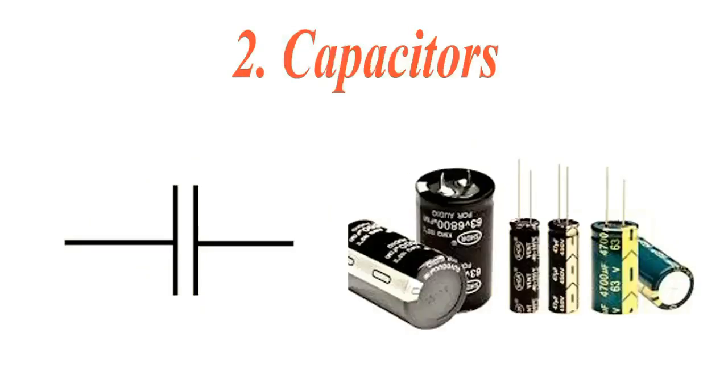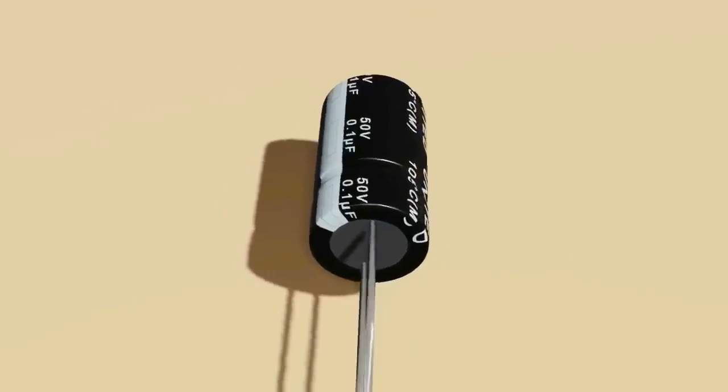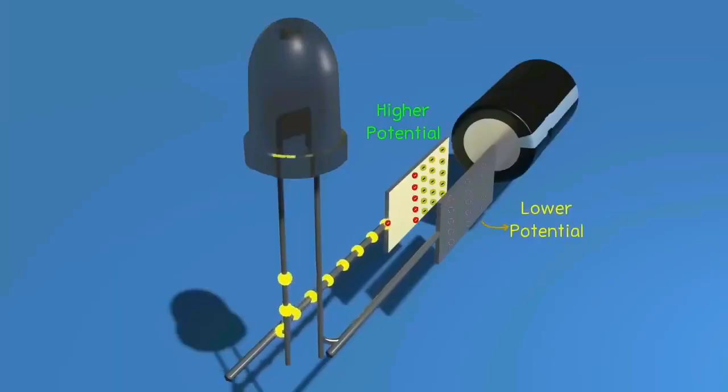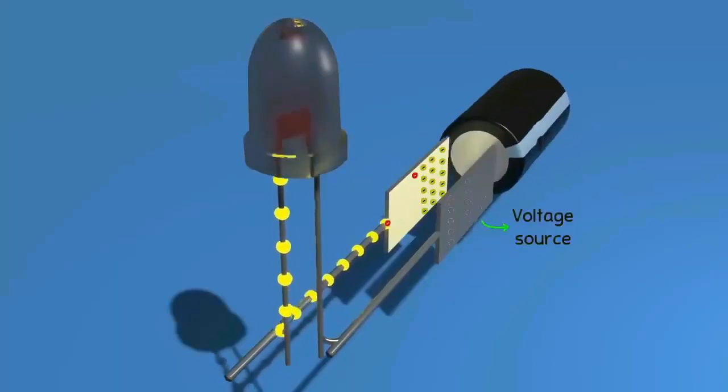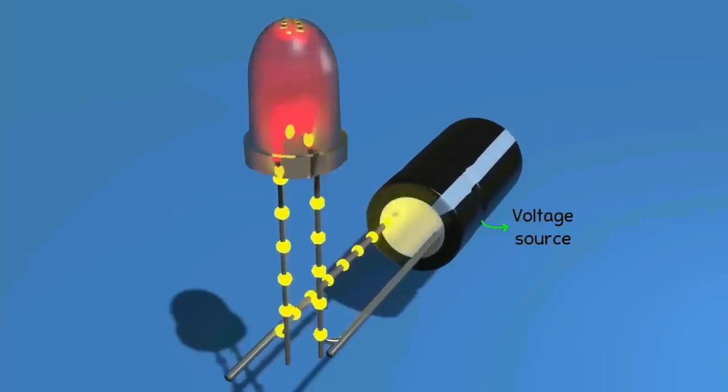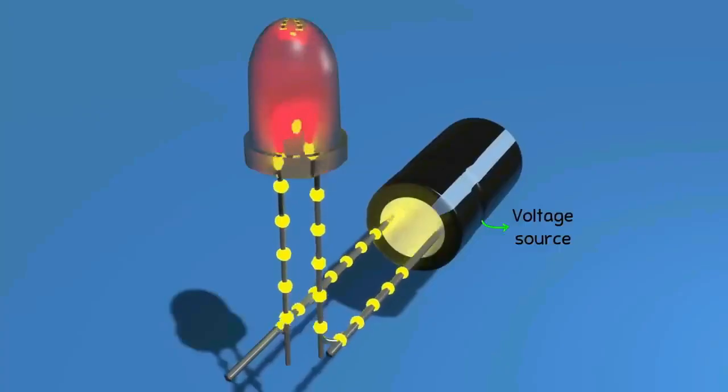Capacitor. A capacitor stores electrical energy temporarily and then releases it when needed. It is like a small rechargeable battery inside the circuit. Capacitors are used for filtering, smoothing, and timing applications in power supplies and audio circuits.